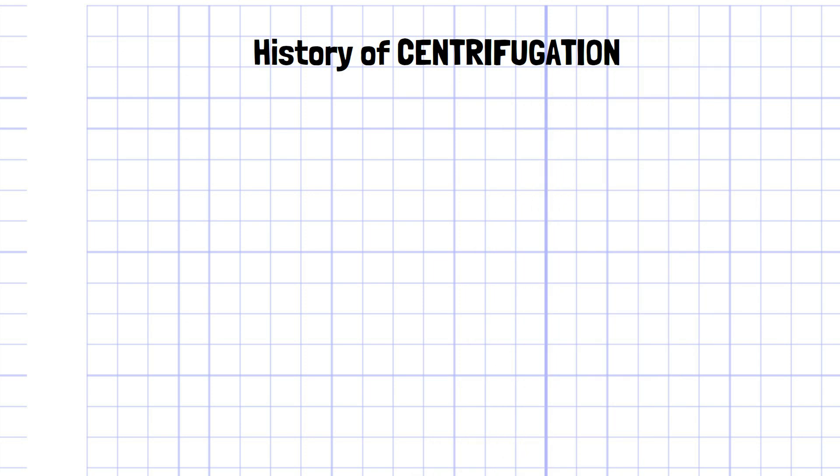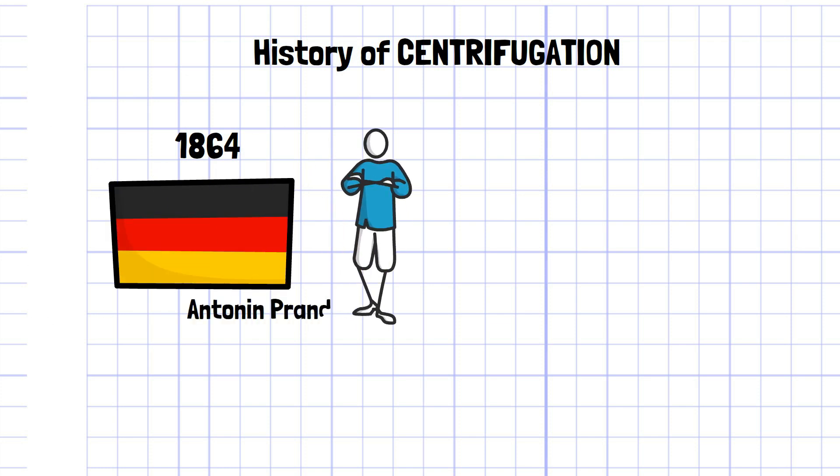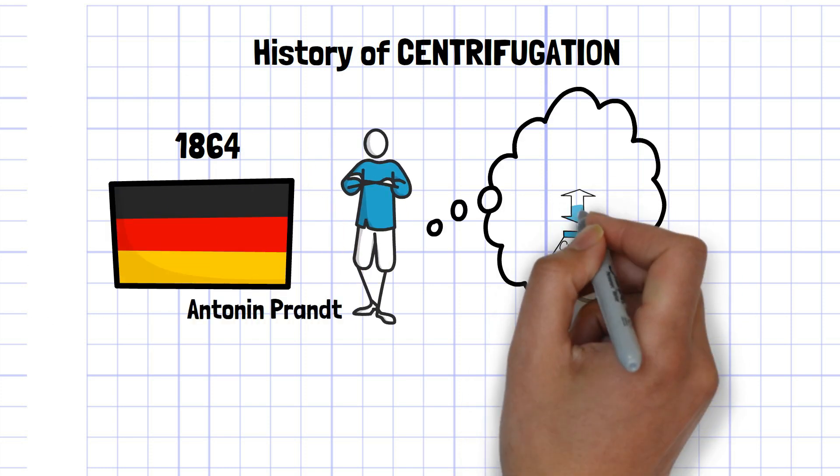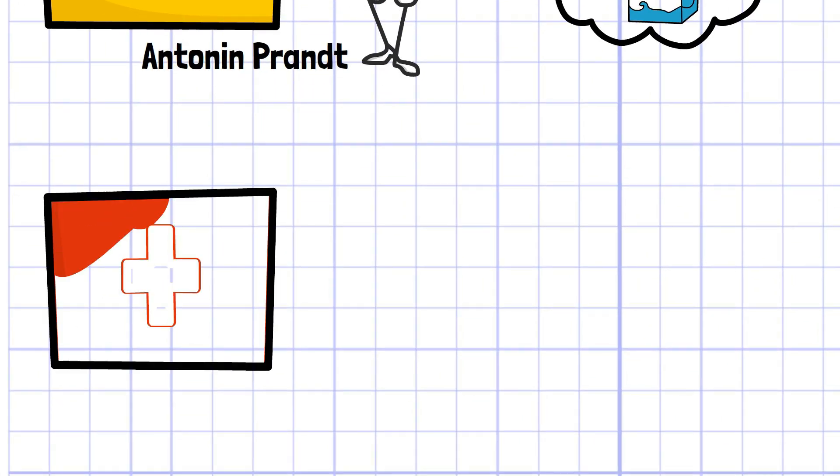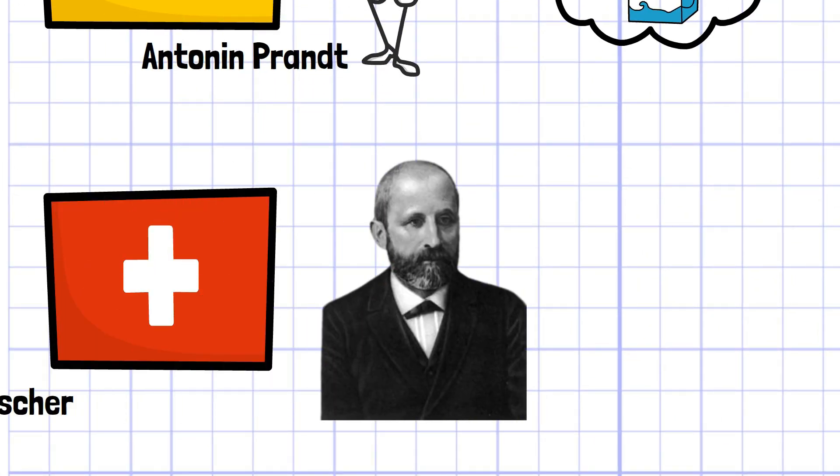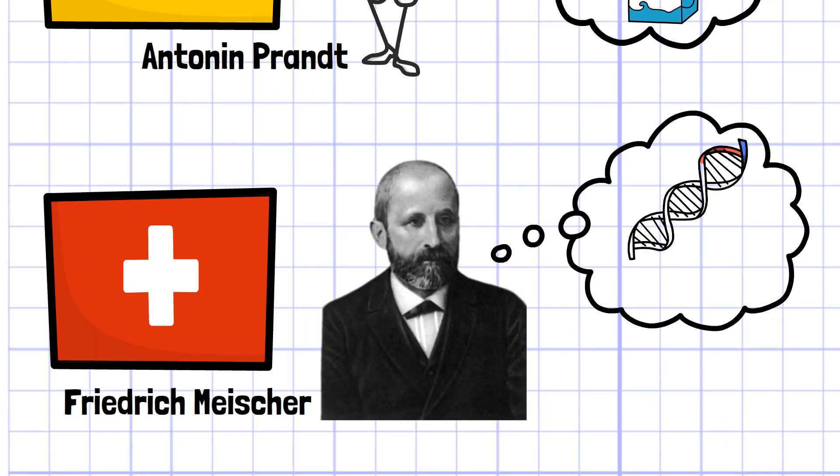The origin of centrifugation dates back to the 19th century. The first was made in 1864 by German master brewer Antoine Prandt to separate the cream from milk. Swiss physician and biologist Friedrich Miescher later succeeded in isolating DNA, which was called nuclein at that time.